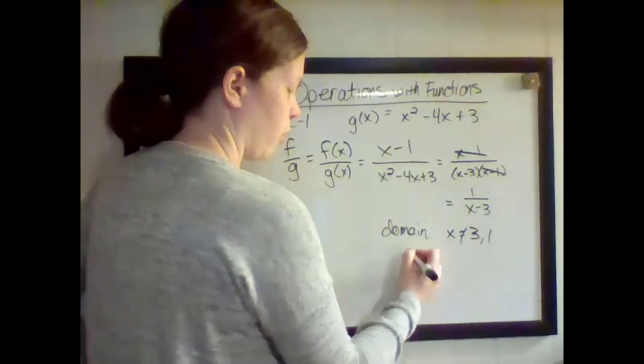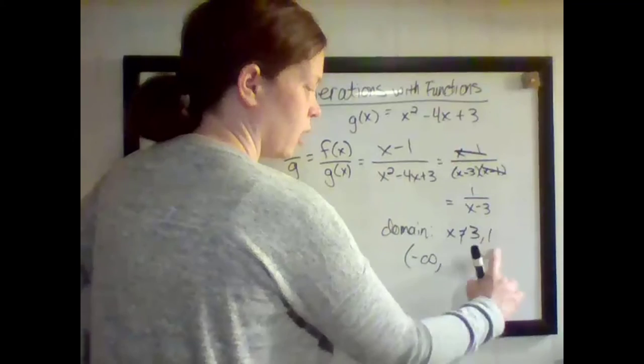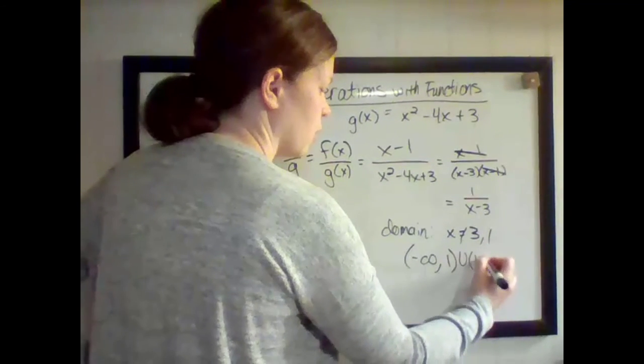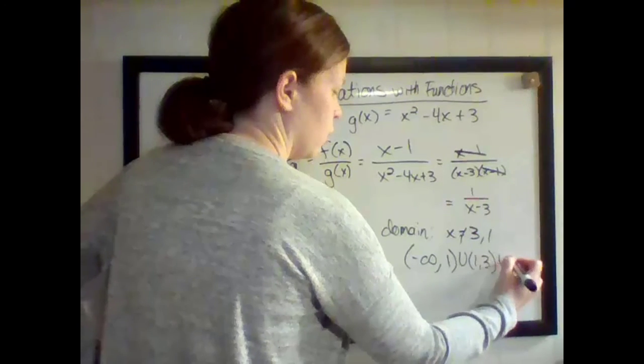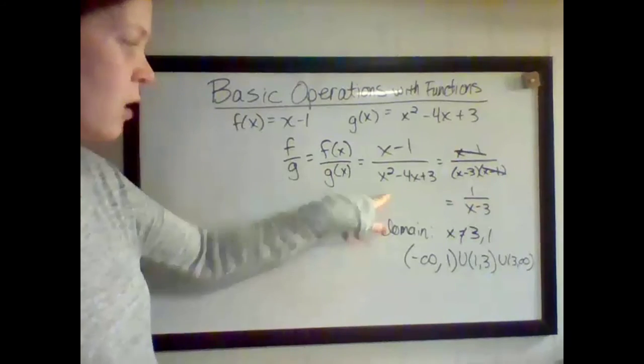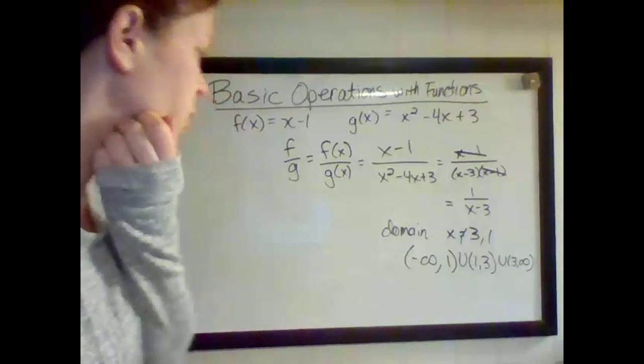Let's write this in interval notation. So negative infinity to 1, union 1 to 3, union 3 to infinity. That's saying anything can be plugged in for x except 1 and 3. Those cannot be part of the domain.